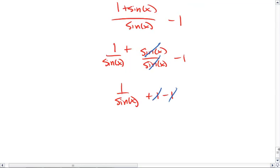The 1's cancel, and 1 over sine of x is the same as cosecant x.